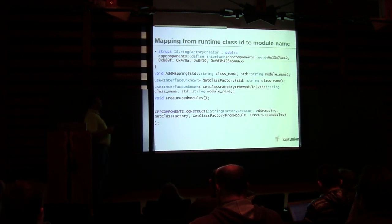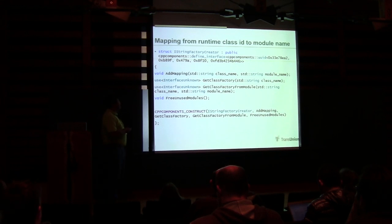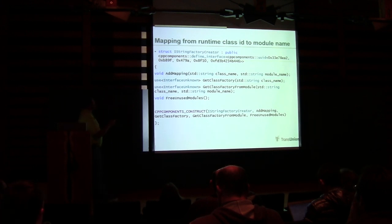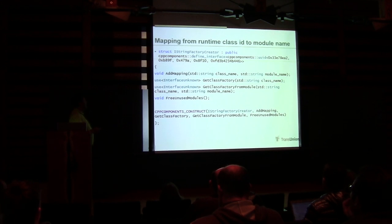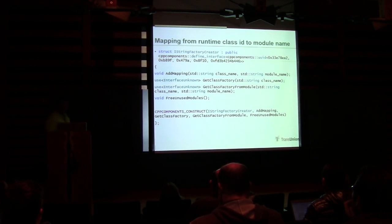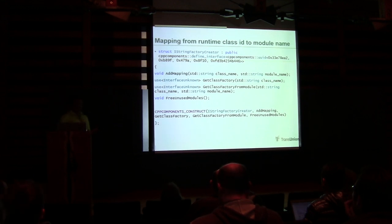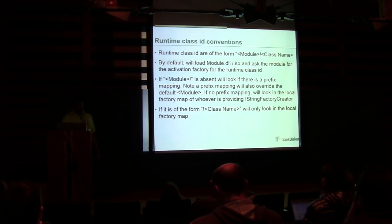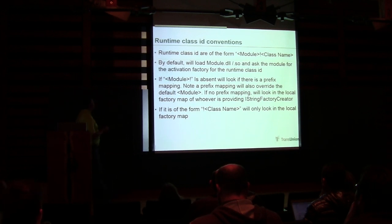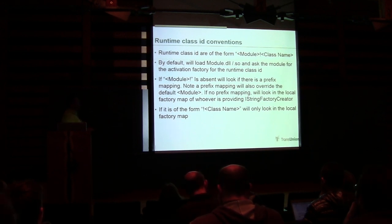We have a thing called iStringFactoryCreator, which is kind of like the master list managing what modules get loaded and unloaded. It has: add_mapping — map from class name to module name; get_class_factory given a class name; free_unused_modules — looks through modules, asks if they have outstanding ref counts, and frees them. Runtime class IDs are of the form module.classname, e.g., person.person. By default, if we don't do anything, we'll load the module — either .dll or .so — and ask it for the activation factory.